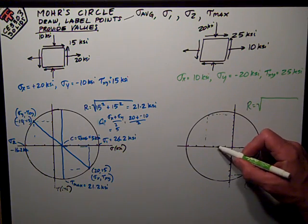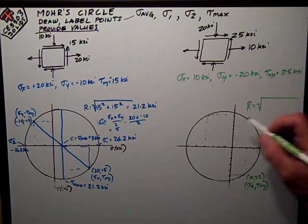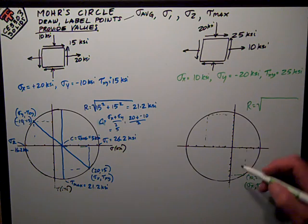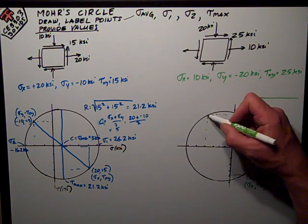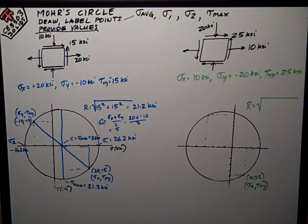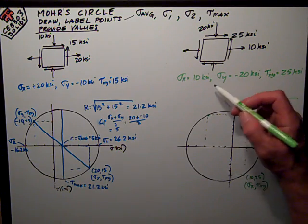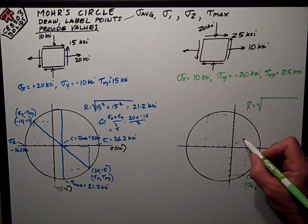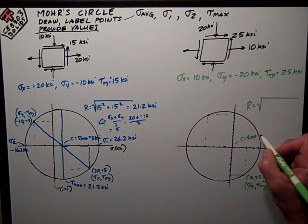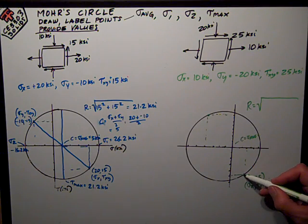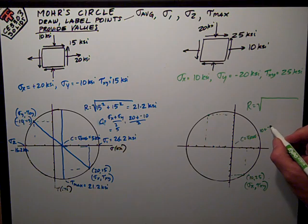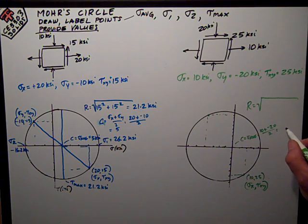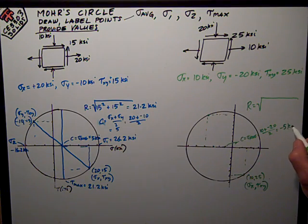Sigma y is negative 20, and the negative value of tau xy is negative 25. I go to negative 20 on the normal stress scale and up 25 to plot that point. The center — sigma average — is equal to 10 plus negative 20, divided by 2. So the center is going to be at negative 5 ksi, and that's sigma average.